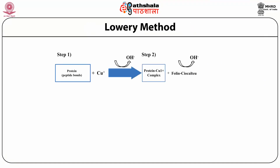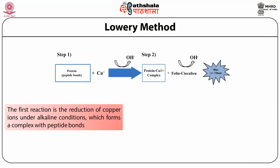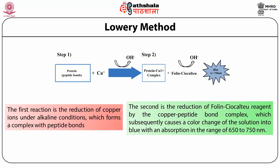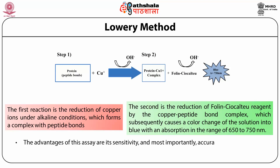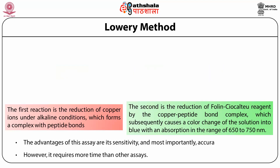We discuss the steps of the Lowry method. The first step is the reduction of copper ion under alkaline conditions, which forms a complex with the peptide bond. The second step is the reduction of the Folin reagent by the copper-peptide bond complex, which subsequently causes a color change of the solution to blue with absorption in the range of 650 to 750 nanometers. The advantages of this assay are sensitivity and most importantly accuracy, however it requires more time than other assays.